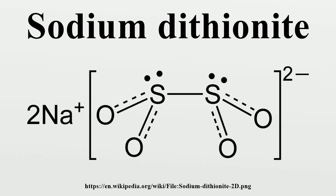The anhydrous form is a monoclinic crystal with a slightly sulfuric odor. It is soluble in water and slightly soluble in ethanol. The dihydrate is a columnar crystal, and it is so unstable that it easily dehydrates to the anhydrous form and is easily oxidized by oxygen in the air. Anhydrous sodium dithionite gradually decomposes to sodium sulfate and sulfur dioxide above 90°C in air. In the absence of air, it decomposes quickly above 150°C to sodium sulfate, sodium thiosulfate, sulfur dioxide, and a trace amount of sulfur.